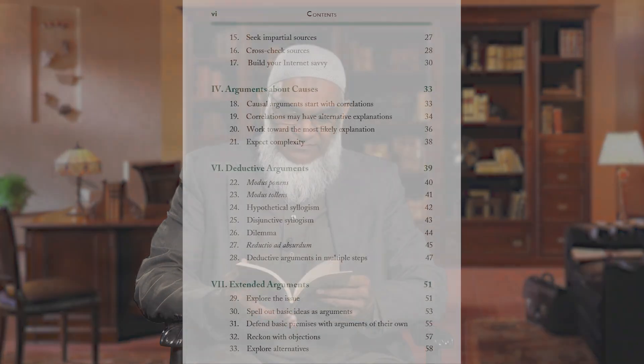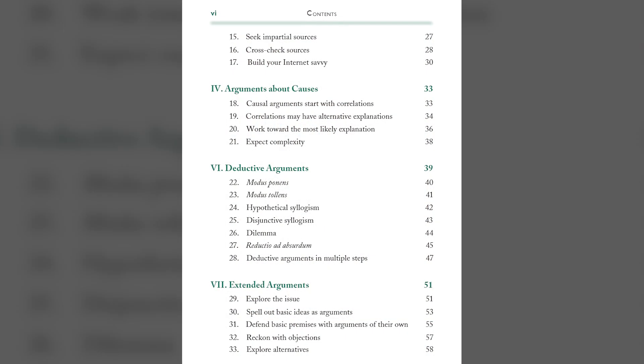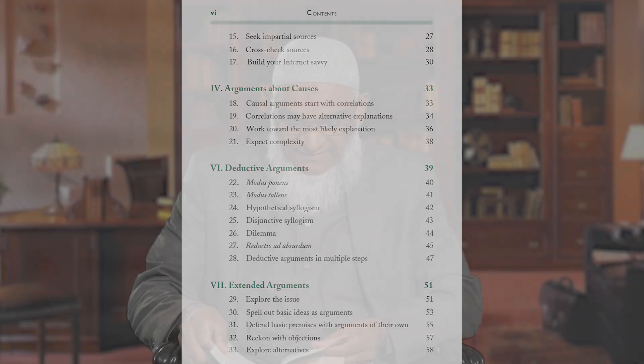Two big mistakes that people make: one is jumping to a conclusion from insufficient evidence, sometimes reaching an overarching conclusion in a hasty manner. The other big mistake, as the author points out, is that when people see two things happening together, they jump to the conclusion that one is the cause of the other. We have to be aware of that.